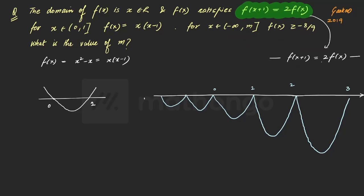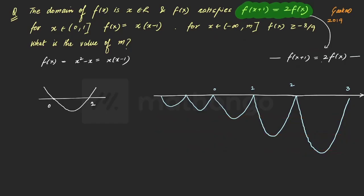Our target is to find where f(x) ≥ −8/9. We need to check where −8/9 intersects the graph. The minimum of f(x) on [0,1] occurs at x = 1/2, giving f(1/2) = 1/4 − 1/2 = −1/4. So the point (1/2, −1/4) is the minimum on the first interval.